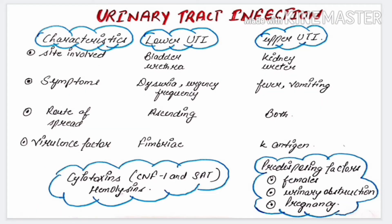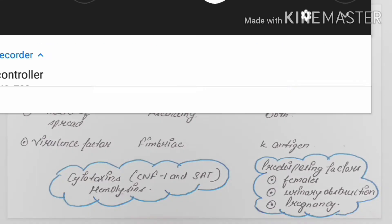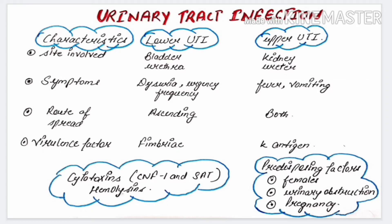According to the site involved, UTI is divided into two parts: lower UTI and upper UTI. If the site involved is the bladder or urethra, it is called lower UTI. If the site involved is the kidney or ureter, it is called upper UTI. Symptoms of lower UTI include dysuria, urgency, and frequency.